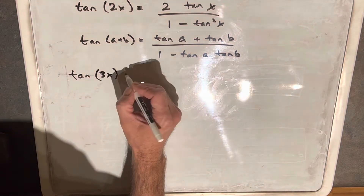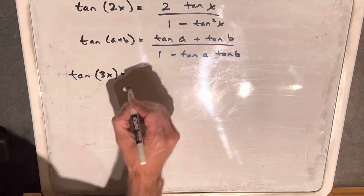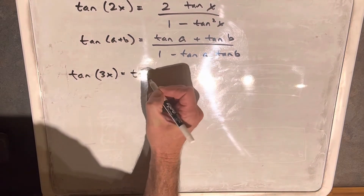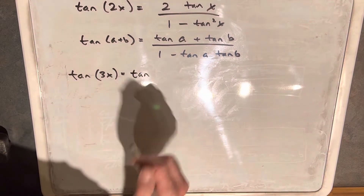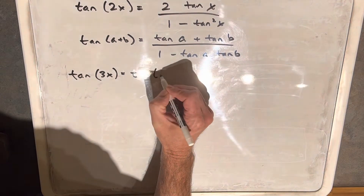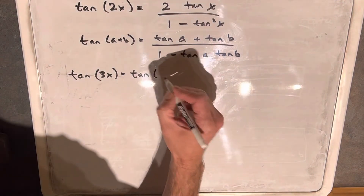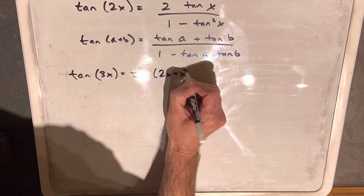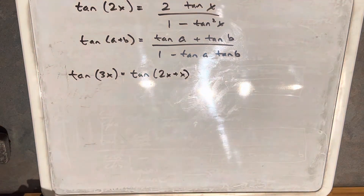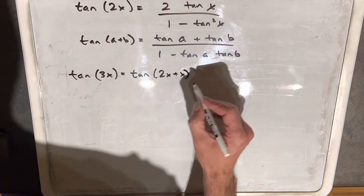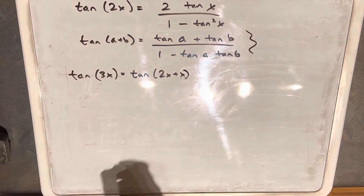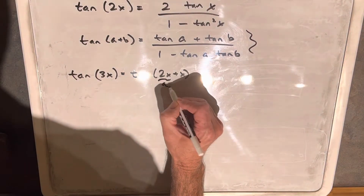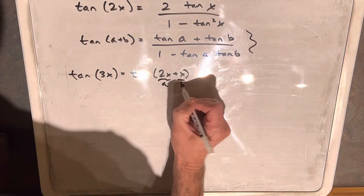How I'm going to do that is just use what we have above. It's pretty logical — instead of writing 3x, we're going to write it as 2x plus x. That's going to allow us to use our sum of angle formula and just plug in for the value of a and value of b.